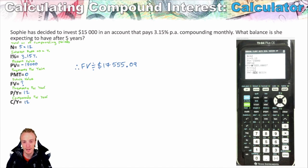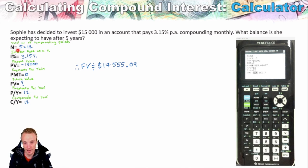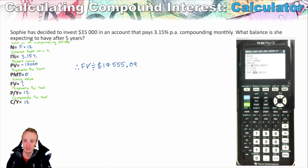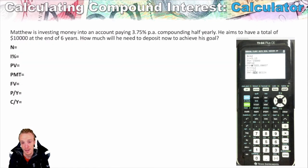What's really neat about this is we can actually calculate any one of these values — the total number of compounding periods, the interest rate, the present value, PMT, the future value, payments per year, or compounding periods per year — depending on what the question is asking for. We'll go through three more examples where I show you we can calculate values other than just the future value.